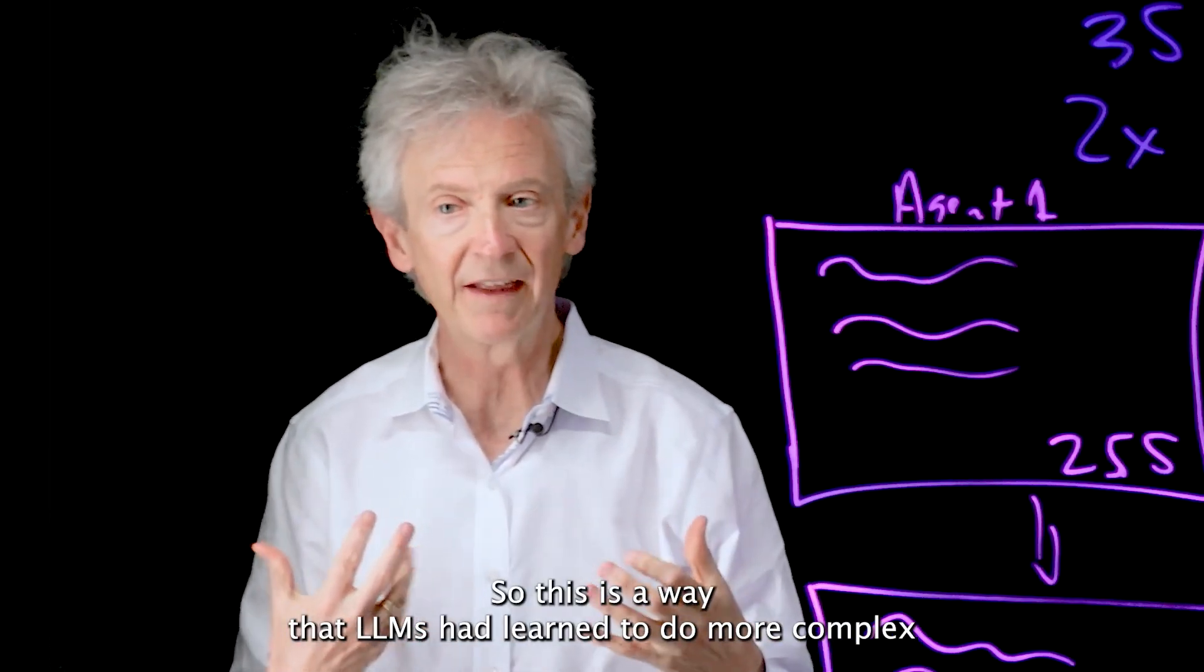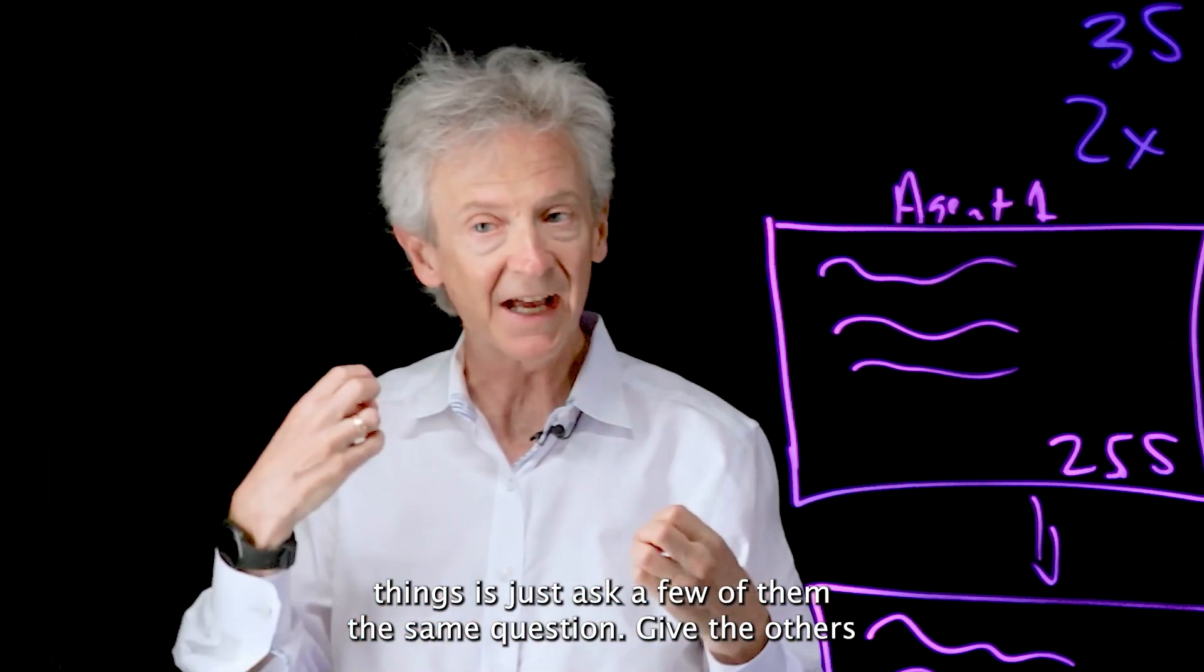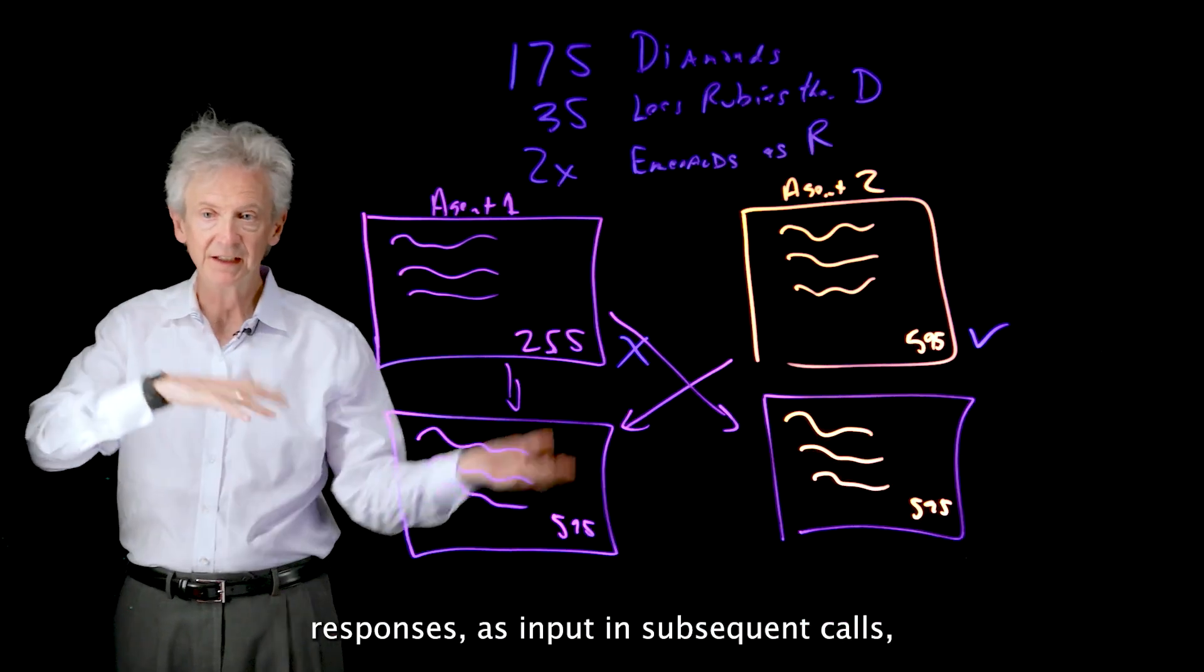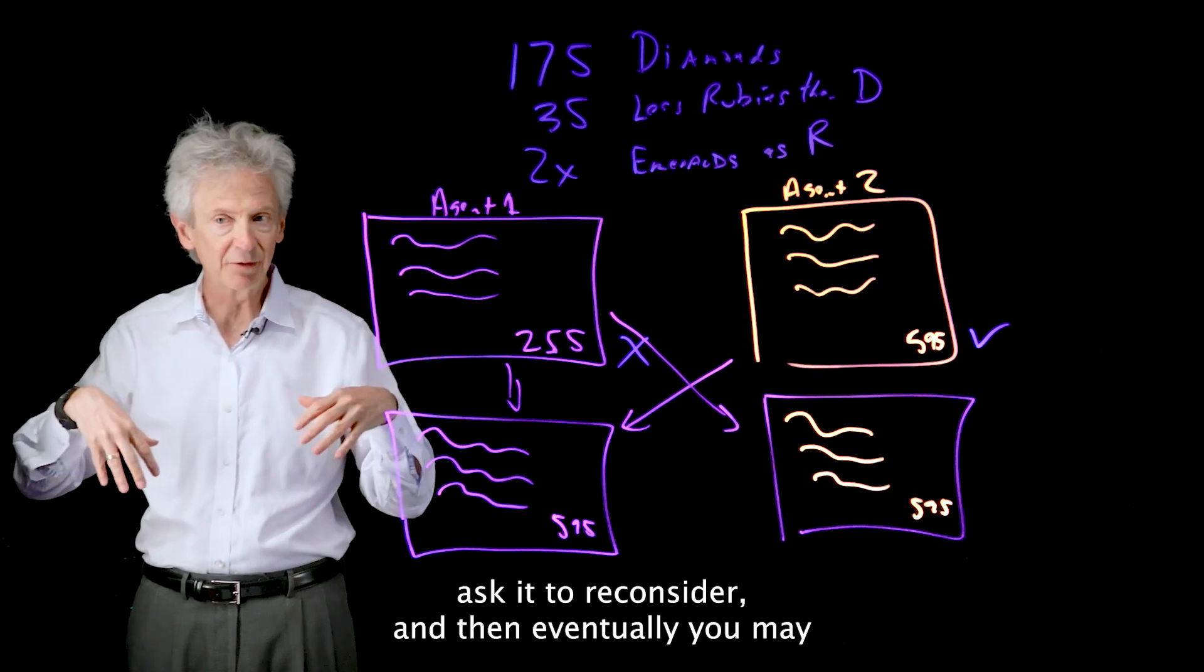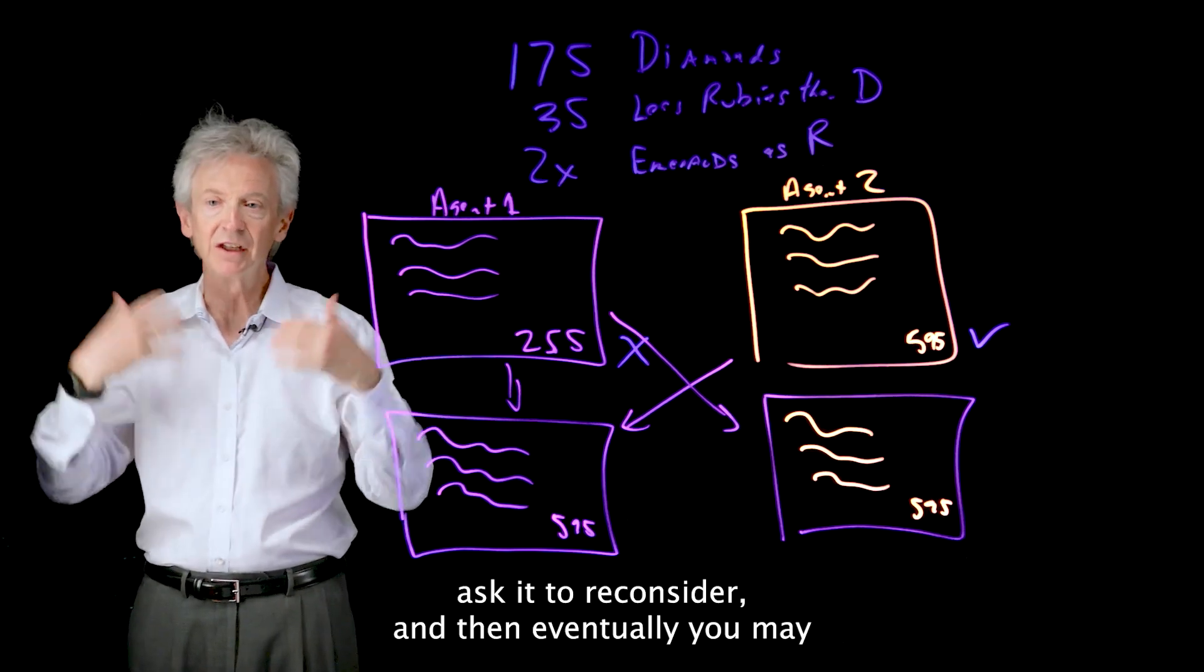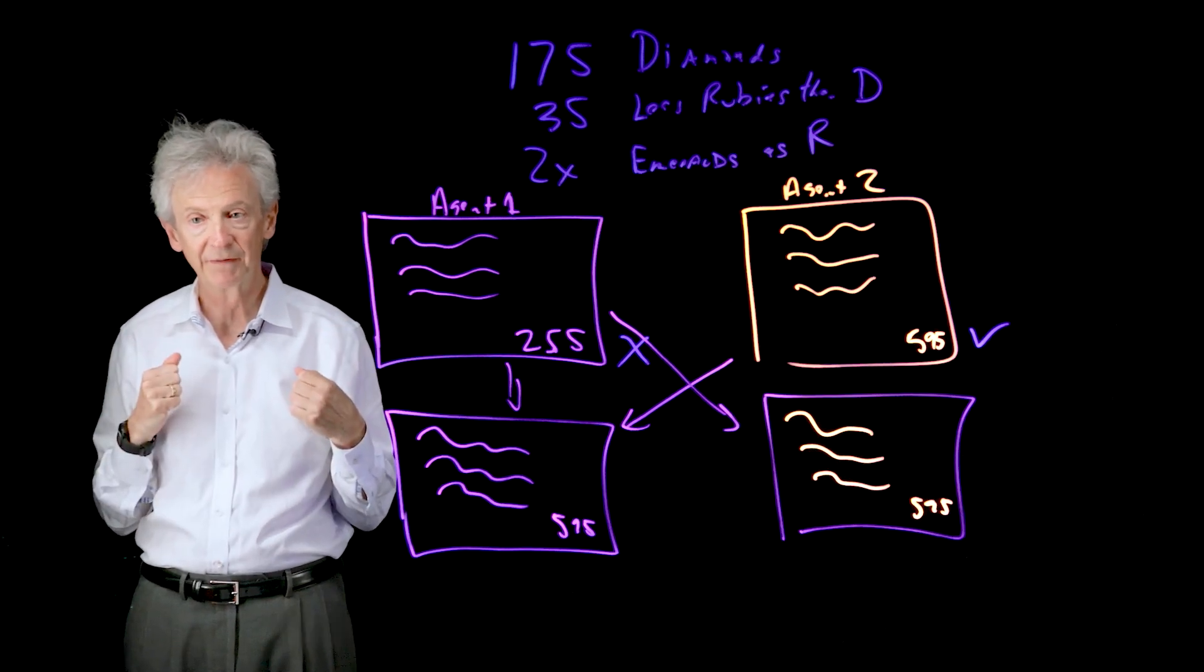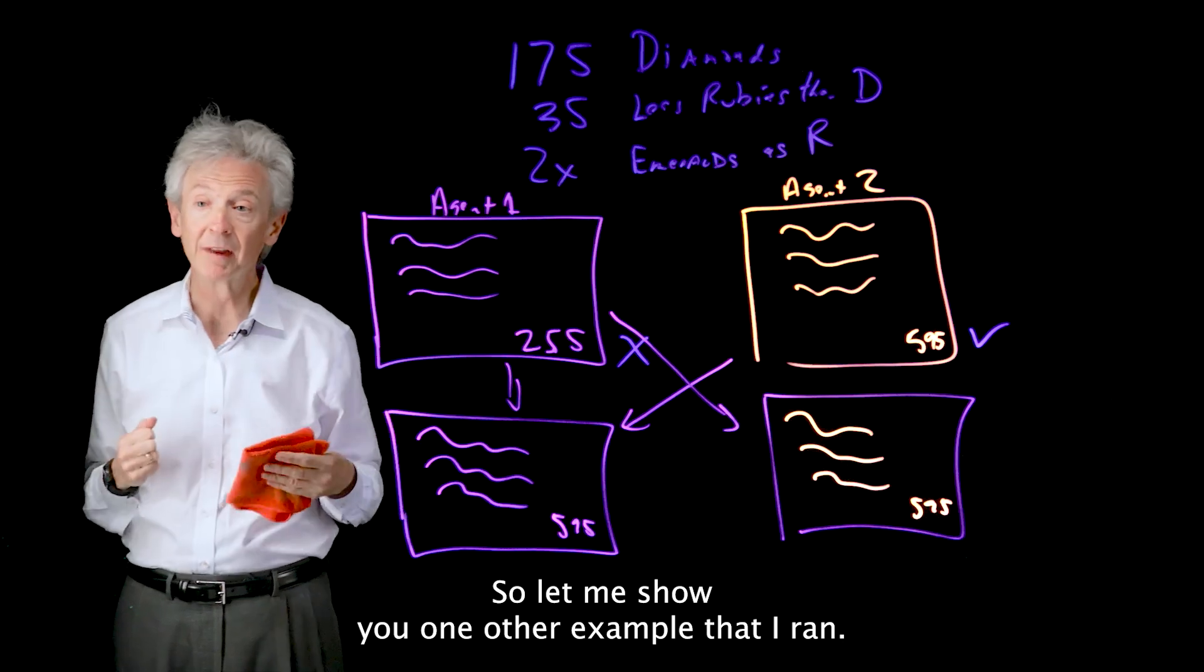So this is a way that LLMs have learned to do more complex things, is just ask a few of them the same question, give the other's responses as input in subsequent calls, ask it to reconsider, and then eventually you may find a consistent answer among the models.